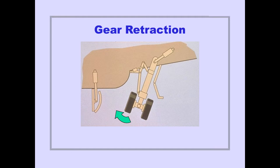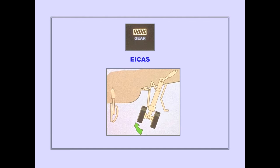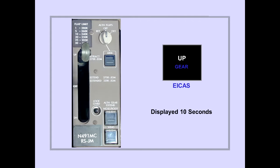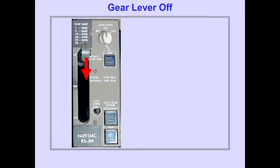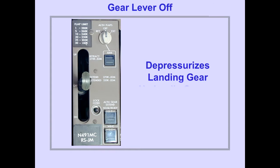During gear retraction, brakes are applied automatically to stop wheel rotation. The ICAS gear in transit indication is displayed while the gear move to the up and locked position. The ICAS gear up indication is displayed when all gear are up and locked, and remains displayed for 10 seconds after all gear are retracted. Placing the gear lever off de-pressurizes the landing gear hydraulic system.